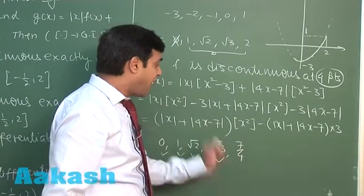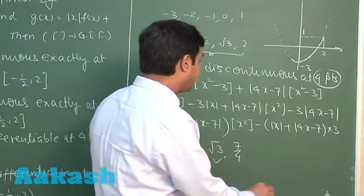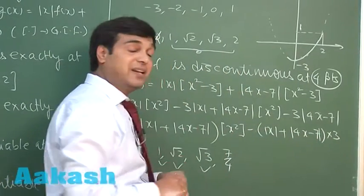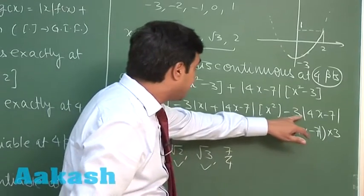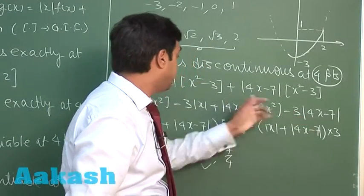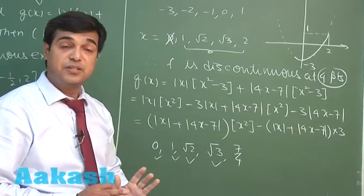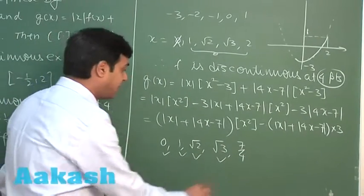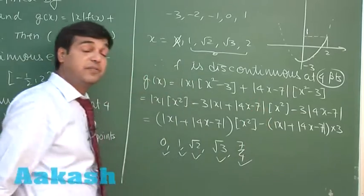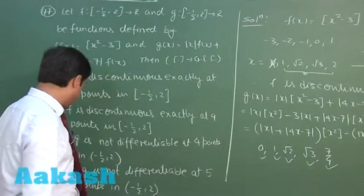7 by 4, again we can see when we take the term this mod of 4x minus 7 here, we can see this is non-differentiable while this term is differentiable. Hence, the function is non-differentiable. So we can find that the function g is not differentiable at exactly 5 points.